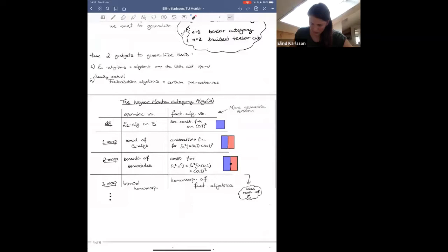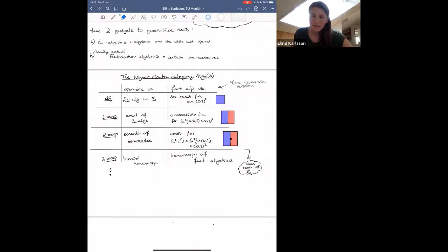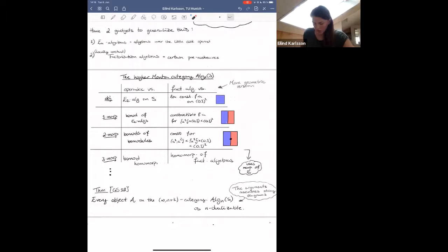So the next thing to mention is what we know about dualizability in these categories already. And there is one theorem by Willman and Scheinbar from 2018, that tells you that every object A, so every EN algebra, in this infinity n plus k category Alge n, will be n-dualizable. And if you're familiar with string diagrams, then the arguments really do resemble string diagrams using this factorization algebra version. But the takeaway I want you to have from this theorem is exactly what happens with the levels here. So we know that every object is n-dualizable, but in an infinity n plus k category, it makes sense to ask for dualizability up to n plus k. So there is still a lot that is unknown.